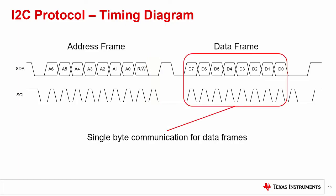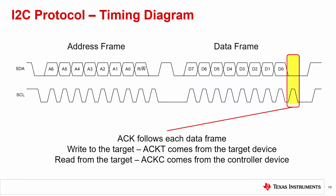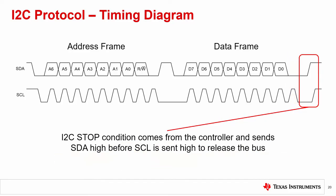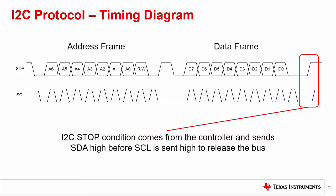The address frame is followed by one or more data frames. These frames are sent one byte at a time. After the data byte is transferred, there is another ACK or acknowledge from the target. If the data byte is a write to the device, then the target device pulls the SDA low to acknowledge the transfer. If the data byte is a read from the device, the controller pulls the SDA low for an ACK or acknowledge from the controller to acknowledge the receipt of the data. After the communication is completed, the controller issues an I2C stop condition. SCL is first released and then SDA is released. This is the controller indicating that the communication is completed and the I2C bus is released. This is the basic setup for any I2C communication between the controller device and the target device.